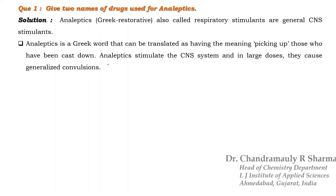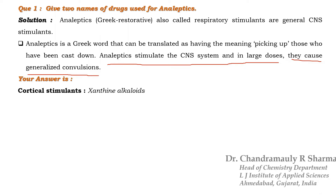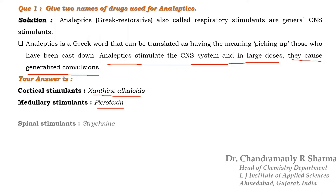Most importantly, analeptics stimulate the CNS system and in large doses they cause generalized convulsions. So your answer is: there are three types of analeptics. First is cortical stimulants and its example is xanthine alkaloids — naturally available. Second is medullary stimulants and its example is picrotoxin. Third is spinal stimulants and its example is strychnine.